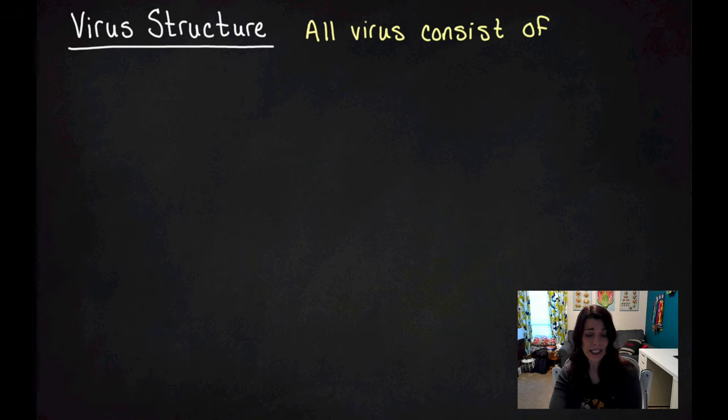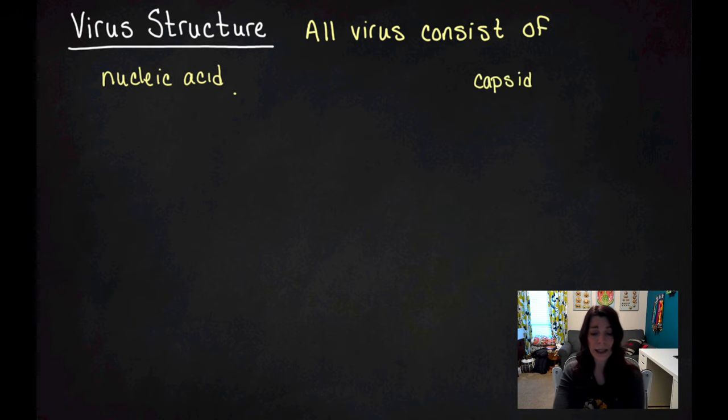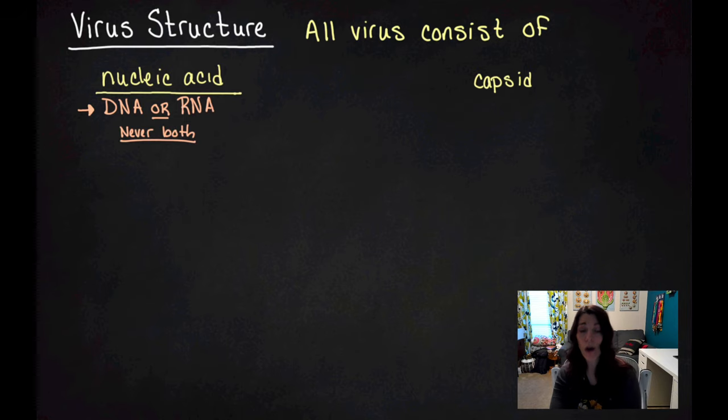All viruses consist of the following two things: They all contain nucleic acid and a capsid. We're going to talk about those in a little bit more depth. A nucleic acid is going to be DNA or RNA. It is always DNA or RNA. It is never both DNA and RNA.